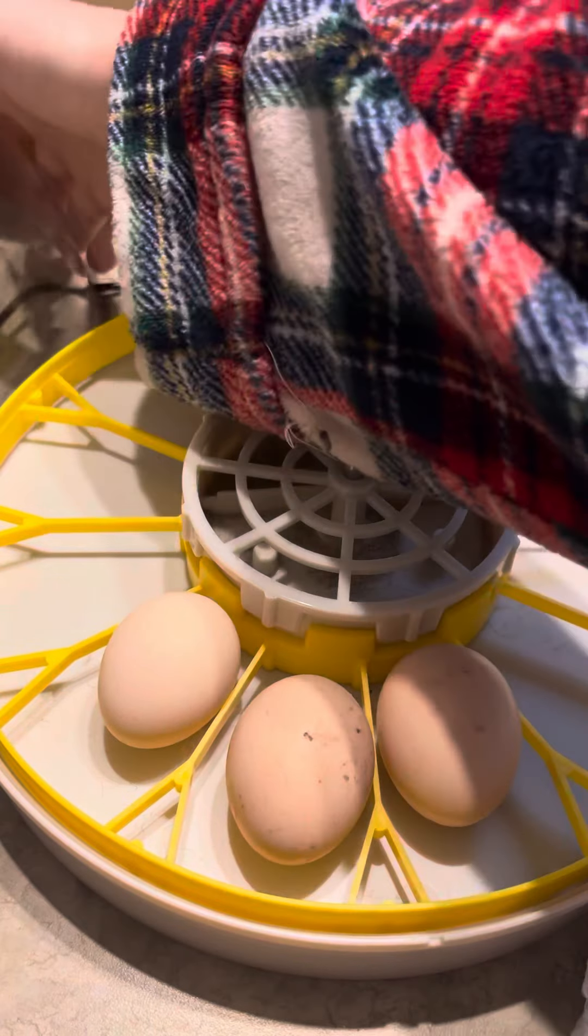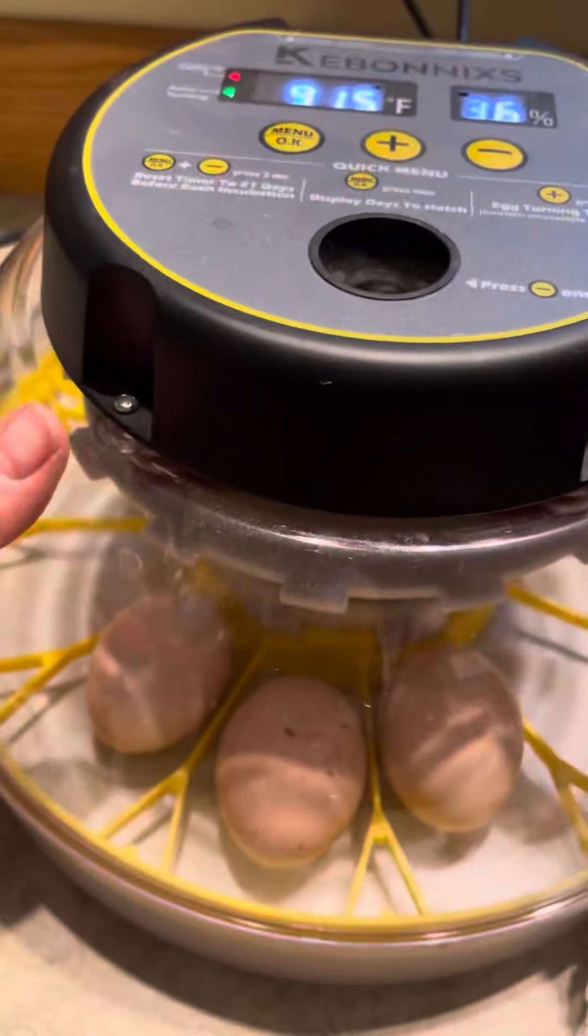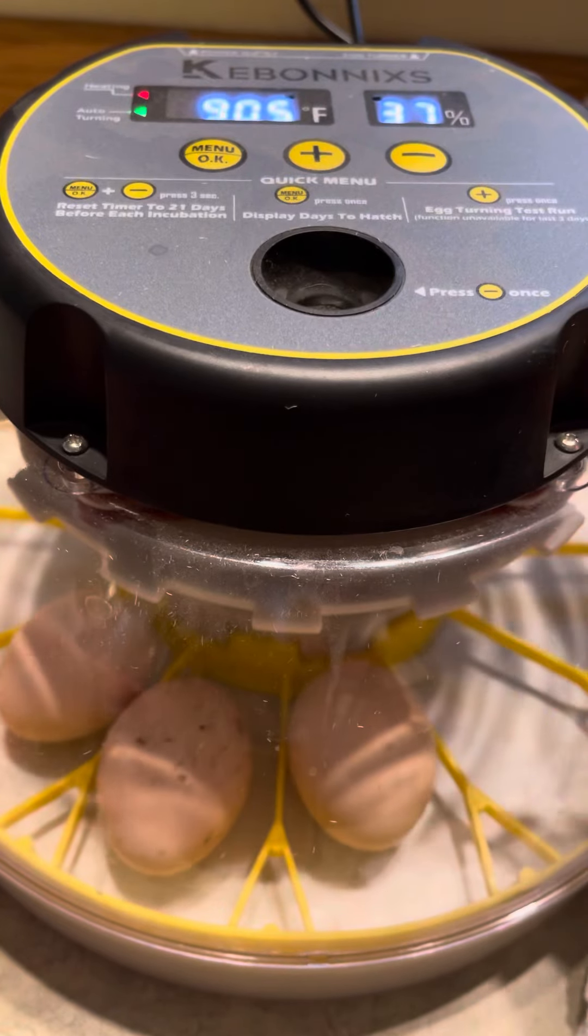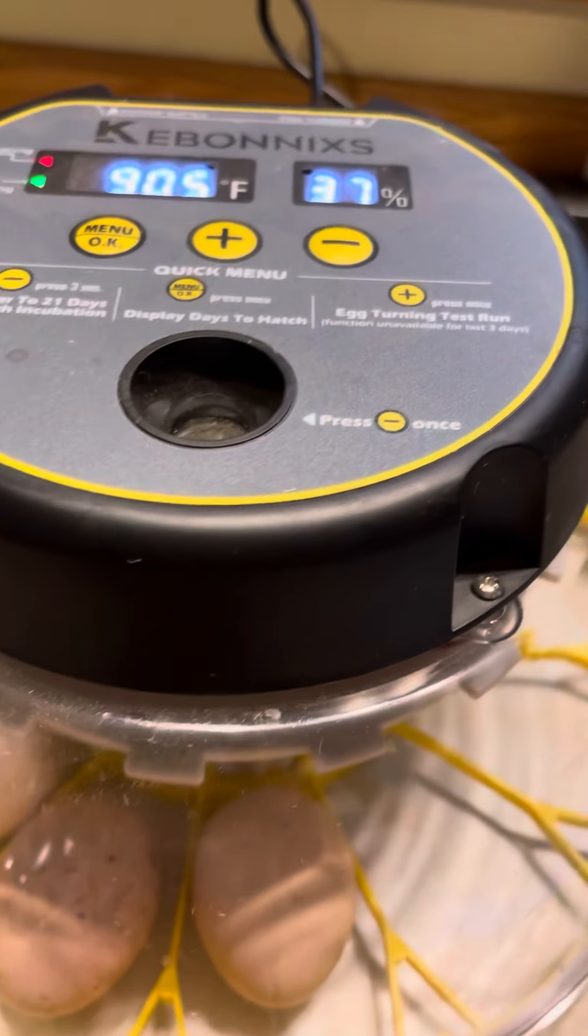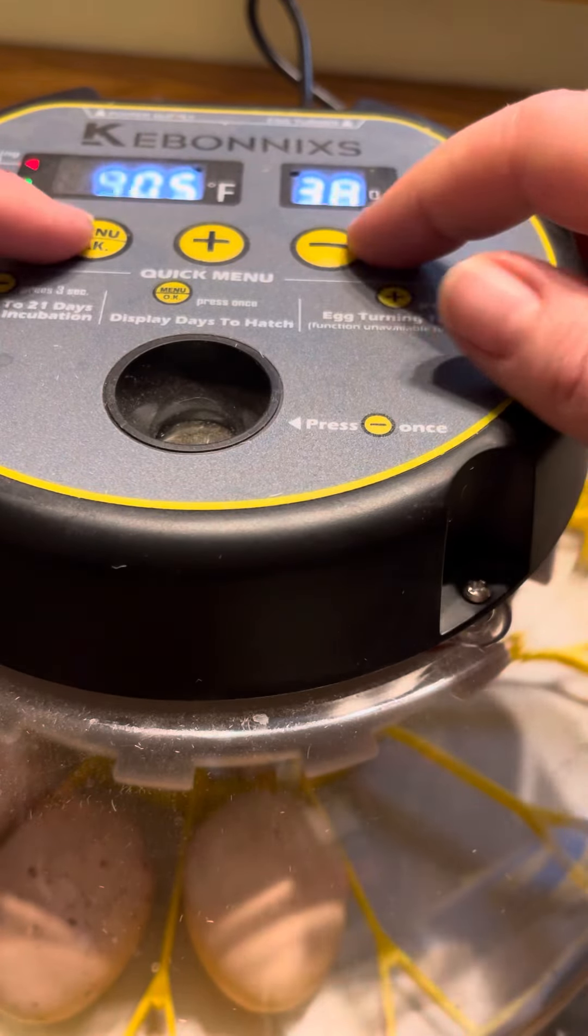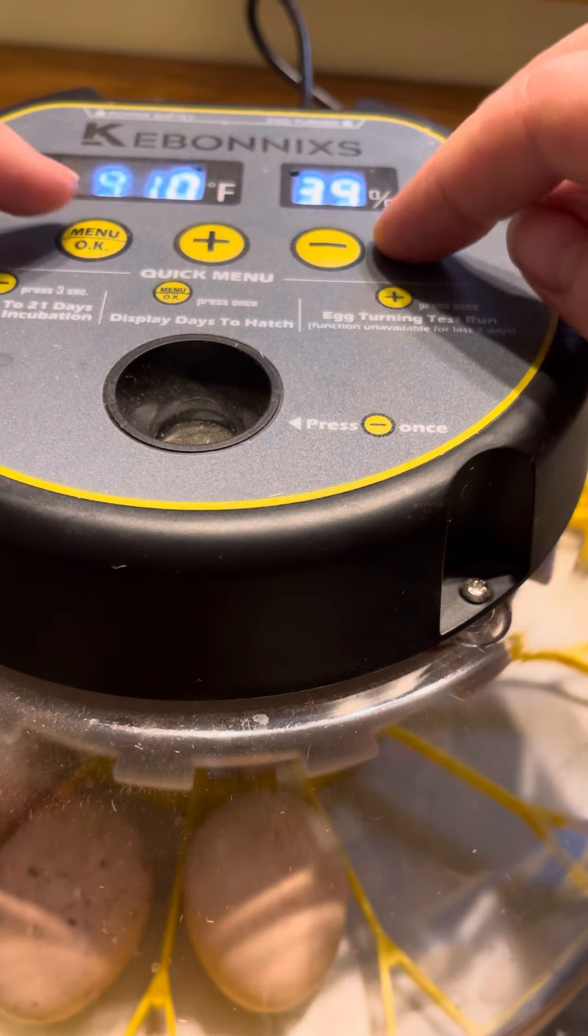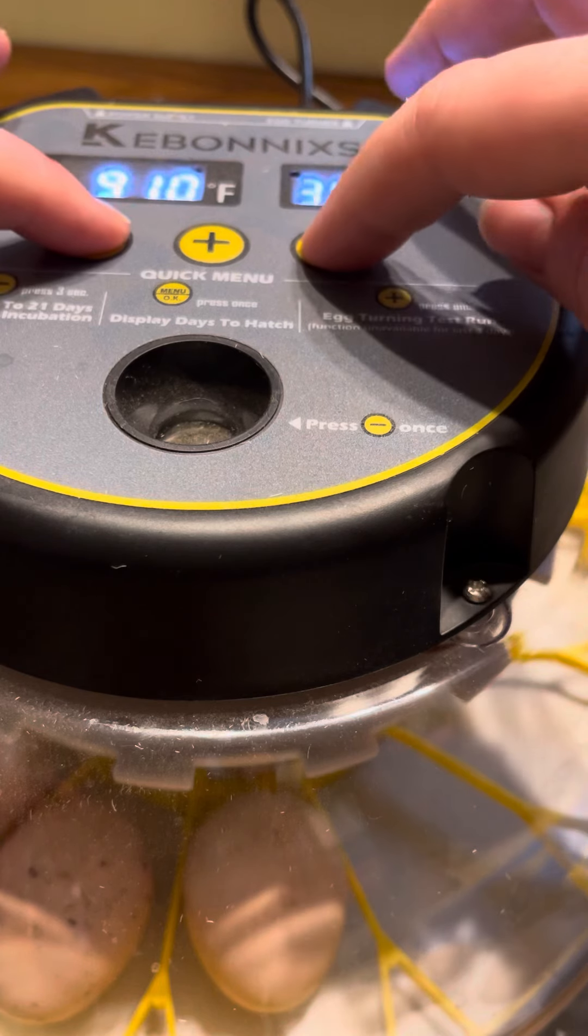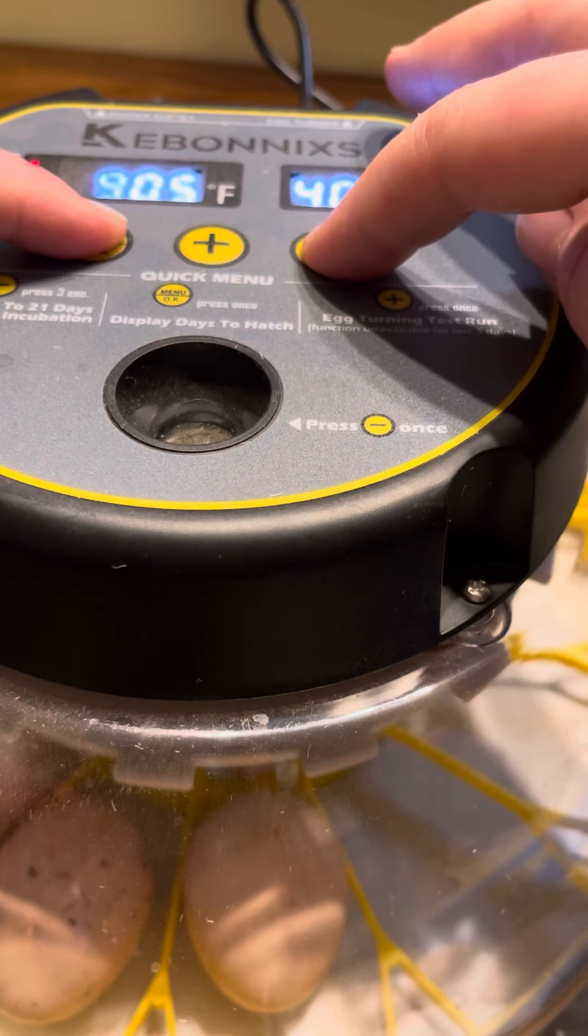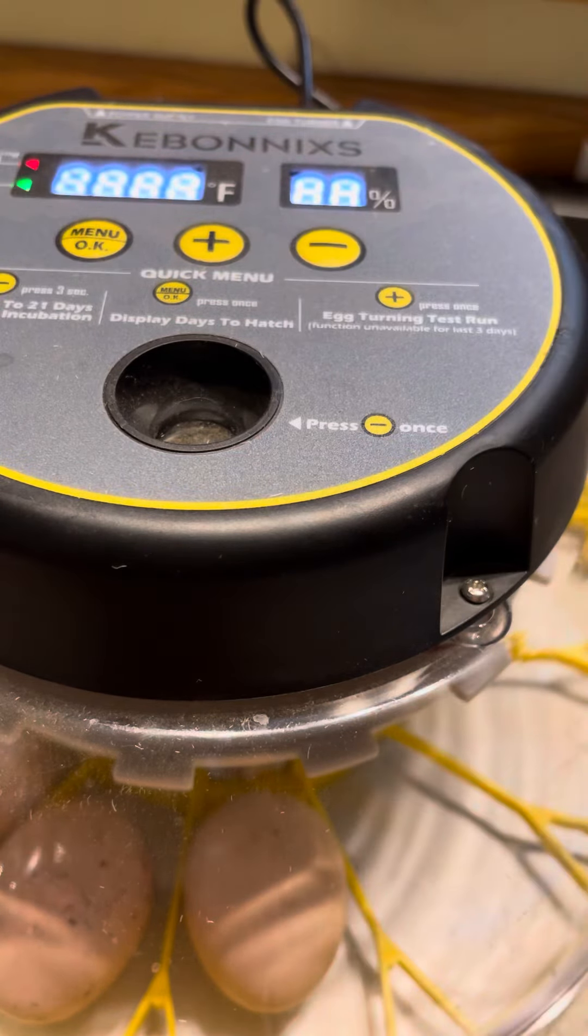When you're ready, put the lid on and make sure it clamps. This one is super easy. What I do is reset it after every hatch back to factory settings. Hit menu and the minus key, and it'll reset itself.